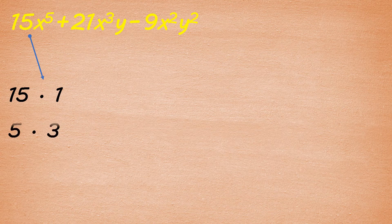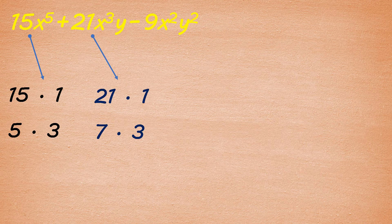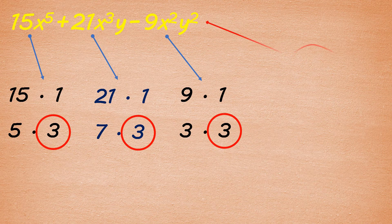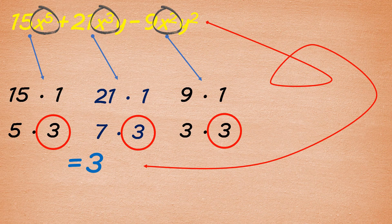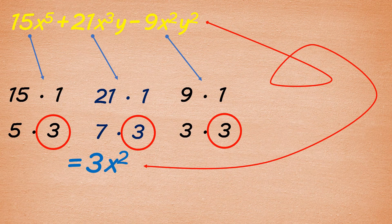Another example: 15x raised to the 5th plus 21x cubed y minus 9x squared y squared. Let's get the factors of each term. Factors of 15 are 15 and 1, and 5 and 3. For 21, we have 21 and 1, and 7 and 3. For 9, we have 9 and 1, and 3 and 3. Their common factor is 3. All three terms have the variable x, and the lowest exponent is 2. So the common monomial factor of this polynomial is 3x squared.